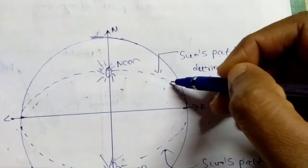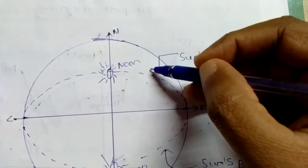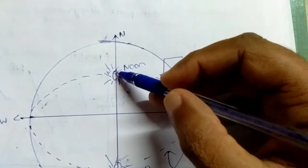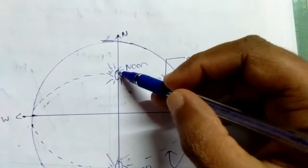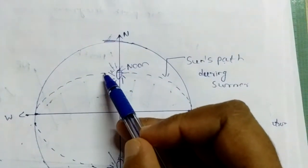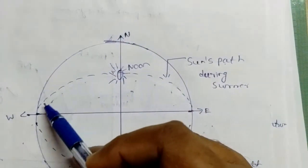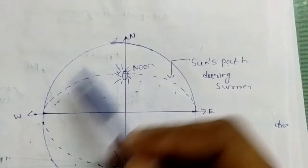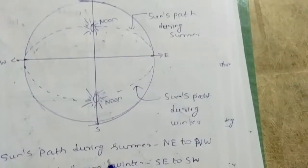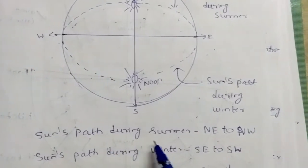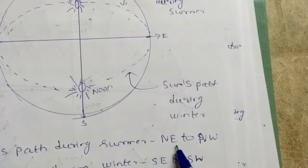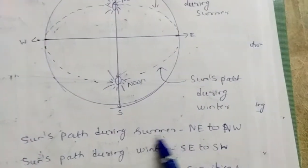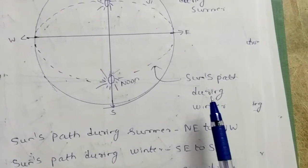The sun travels in that direction through noon — the midday 12 p.m. position — and then continues toward sunset. The sun sets in the northwest region. So what we can infer is that the sun's path during the summer season in the northern hemisphere is from northeast (rising direction) to northwest (setting direction): northeast to northwest.